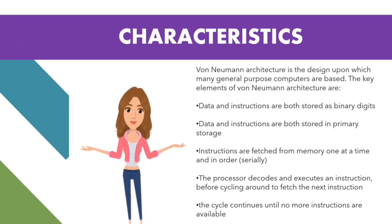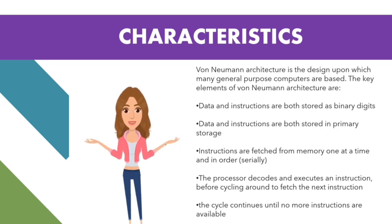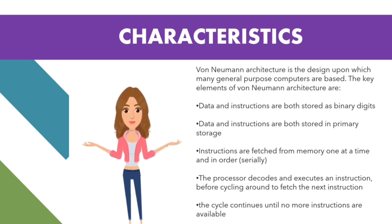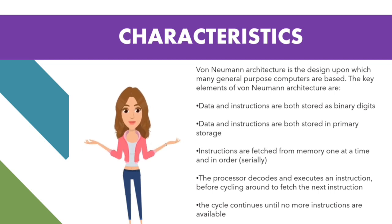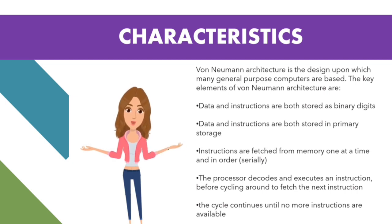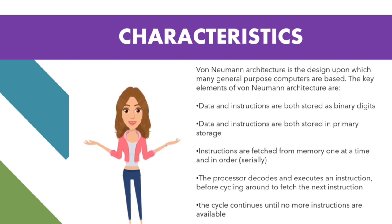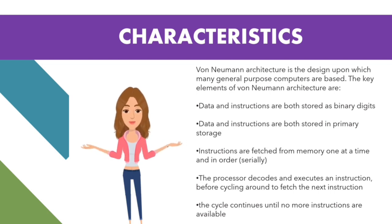Hello everyone, my name is Farali Mahajan, role number four, and today we'll be discussing the characteristics of Von Neumann architecture. The classic Von Neumann architecture consists of a main memory, a CPU, and an interconnection between memory and CPU. Main memory consists of a collection of locations, each capable of storing instructions and data. Every location has an address and contents — the address is used to access the location, and the content is the instruction or data stored there.